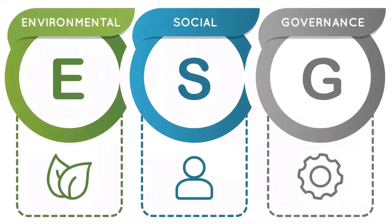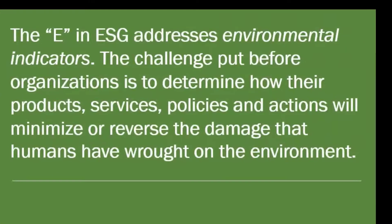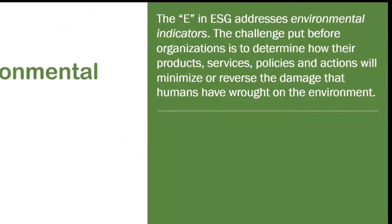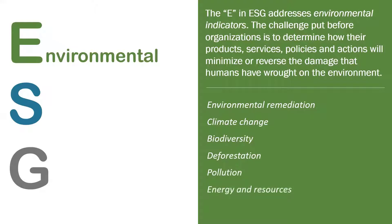Let me tell you a little bit about ESG — Environmental and Social Governance. First, the E: environmental indicators. The challenge put before organizations is to determine how their products, services, policies, and actions will minimize or even reverse the damage that humans have wrought on the environment. This would include things like environmental remediation, climate change, biodiversity, deforestation, pollution, energy and resources, and carbon footprints.